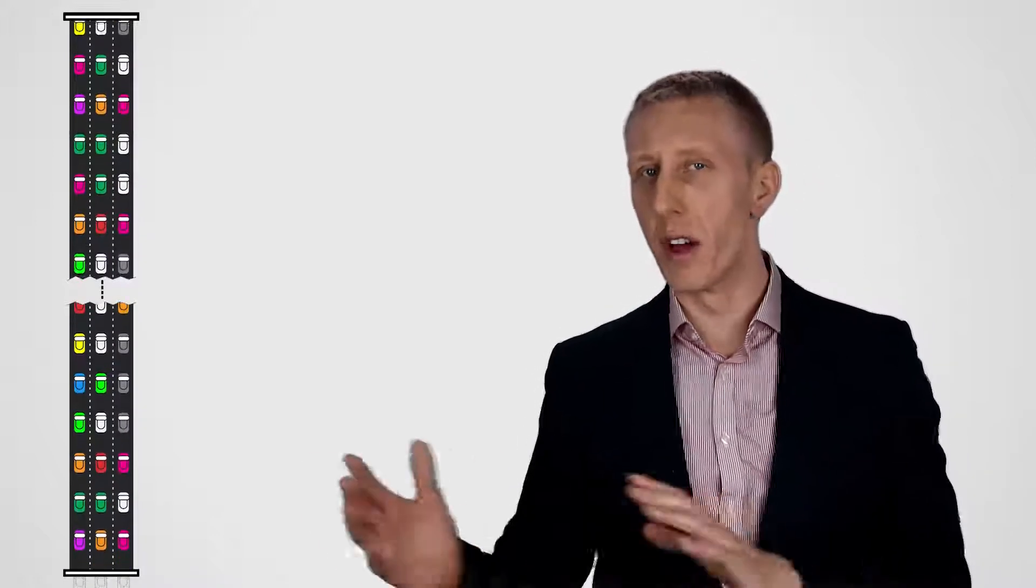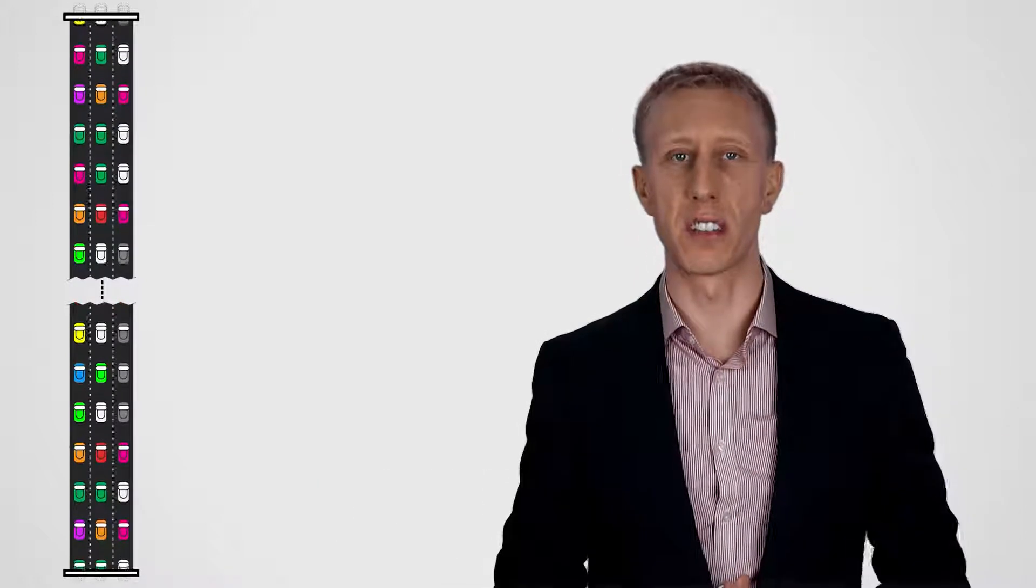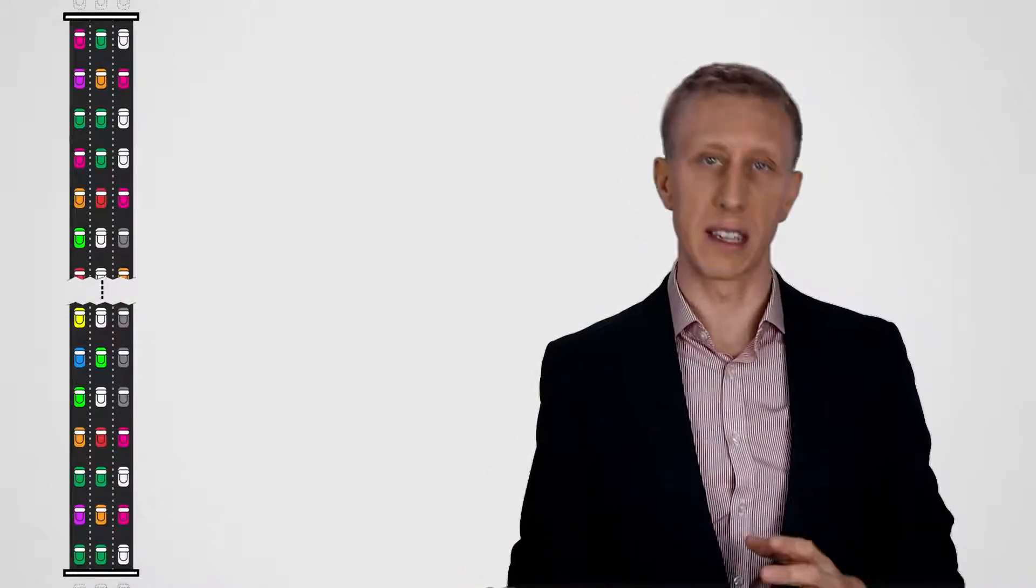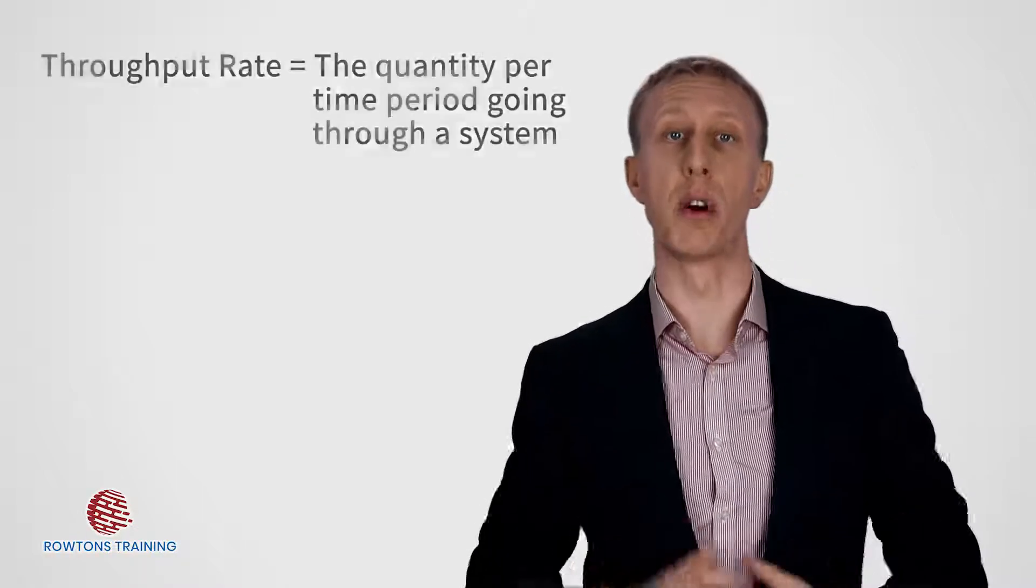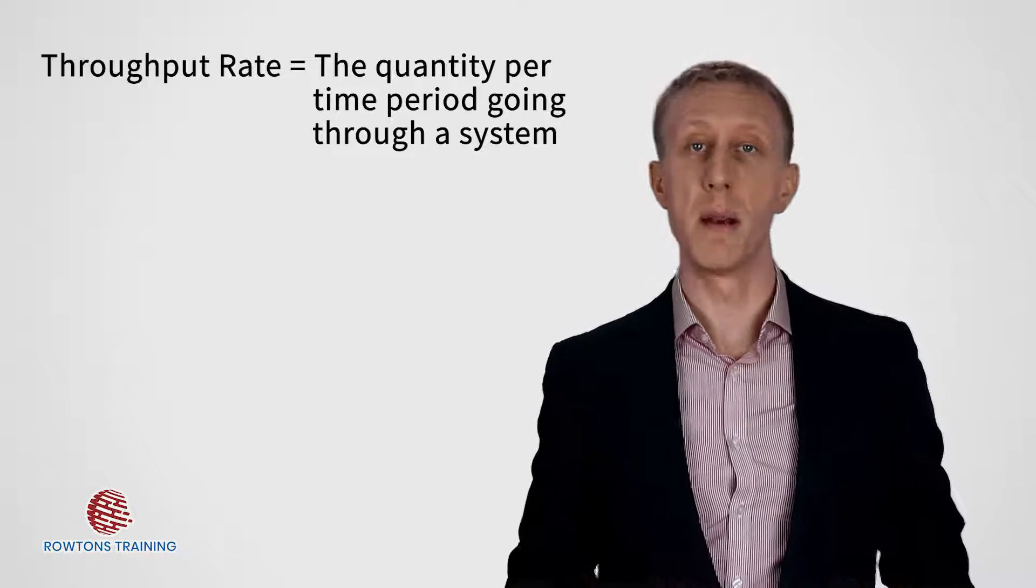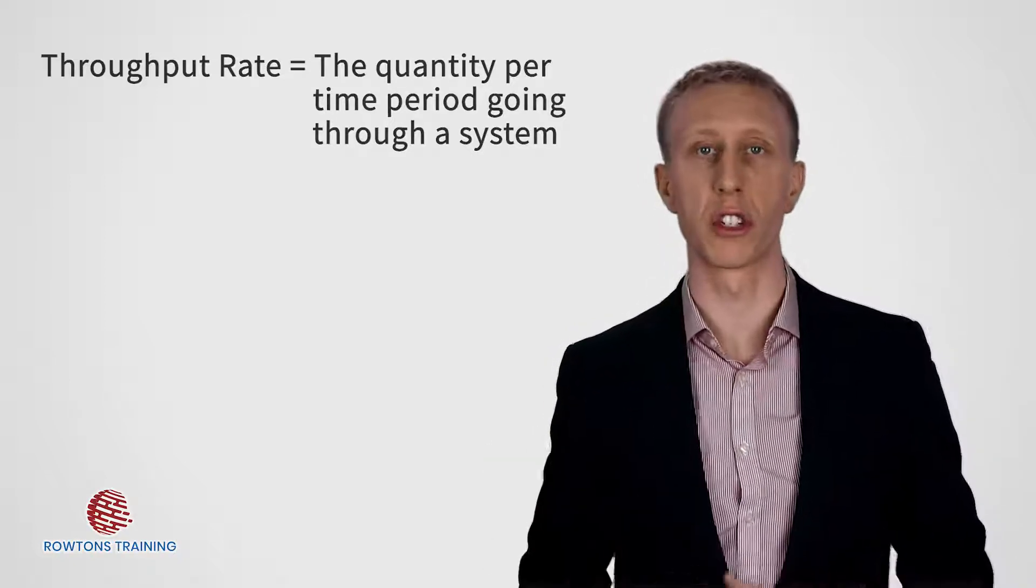Consider a private toll road, where the owner charges for cars to use it. The cars driving down this toll road are the work in progress of the system, and each car, or customer order, wants to get through the system as fast as possible until it's finished and delivered by getting to the end of the road. However, the road owner or operations manager also needs to think about the throughput rate of his system, be that a toll road, a factory, restaurant or hospital.